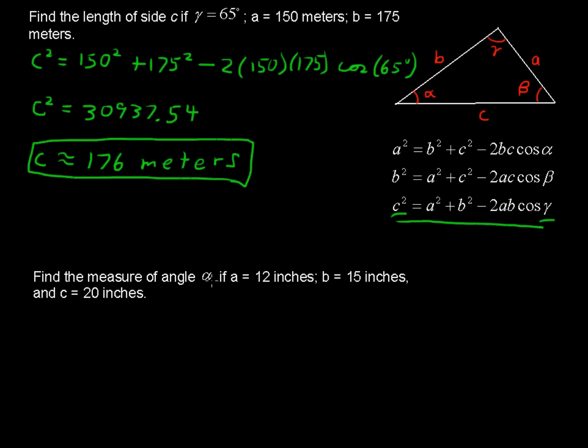Now, the second one says, find the measure of angle alpha if you know all of the other three sides. So if a is 12 inches, b is 15 inches, and c is 20 inches. Well, in this example, where we are trying to find alpha, right here, opposite side length a, we're going to use this equation, this first equation, because we want to find alpha.